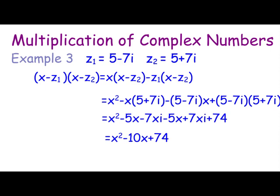And from the previous example we've multiplied that out and we had 74, but you can see what's happened is that the plus and minus 7X have cancelled each other out and just left us with a quadratic with real coefficients.